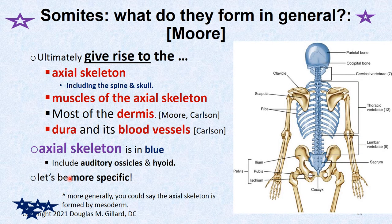More importantly, what do somites give rise to in general? This is a very important slide — make a note card. They ultimately give rise to the axial skeleton — a huge deal, since the whole star of spinal anatomy is the axial skeleton. That includes most of the skull (not all, since neural crest cells form part of the occiput), the muscles of the axial skeleton, most of the dermis, all of the dura mater, and blood vessels. Remember the axial skeleton includes auditory ossicles and the hyoid.